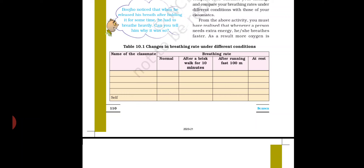After a brisk walk for 10 minutes, check your breathing rate — how many times do you breathe in a minute? Then after running fast for 100 meters, check your breathing rate again. And last, check your breathing rate at rest — how many times do you breathe in a minute when resting? Note all these down in your textbook. This is an activity you have to perform with your friends — contact your friends and perform it together.